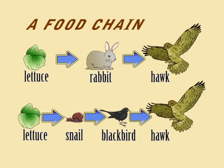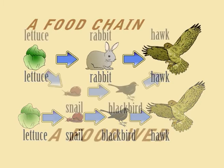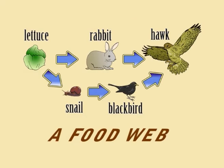In a particular habitat, there may be many food chains, and these can be linked together to form a food web. By tracing back to the start of the food web, we can see that animals are ultimately dependent on plants for all their food.